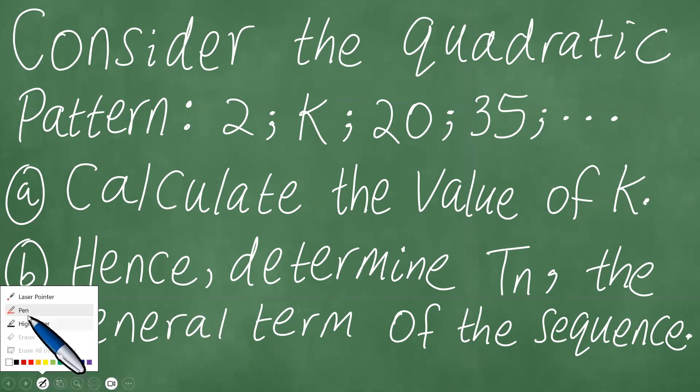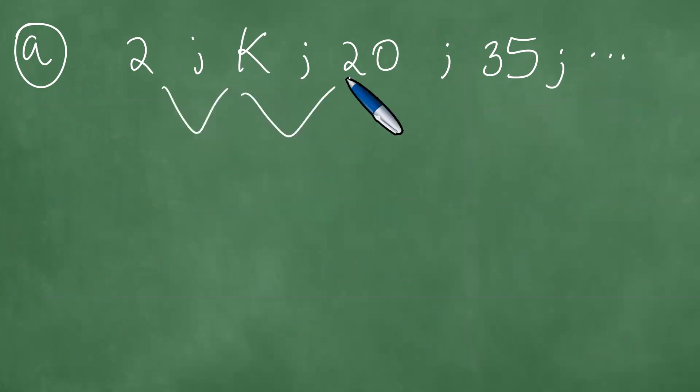First things first, we write down this sequence in part a. We start with 2, k, 20, 35, and so on. So here we have k minus 2, 20 minus k, and we have 35 minus 20, which is 15.